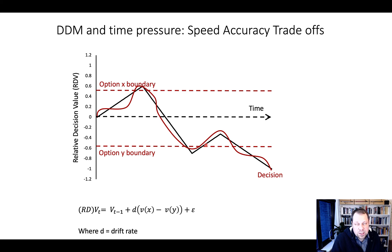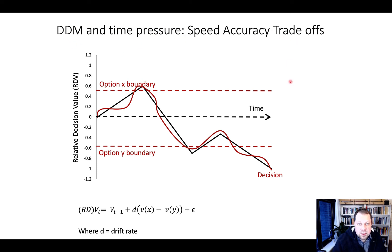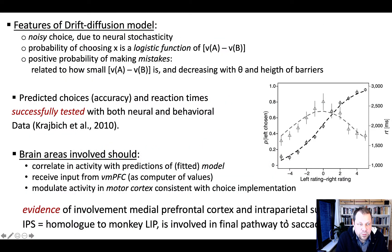If, as experimenters, we limit the amount of time participants have to make a decision, the DDM can also deal with this — time pressure and speed-accuracy trade-offs, which are very commonly observed in cognitive science. Let's now look at the features of the drift-diffusion model.